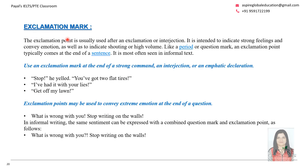Now let's understand the exclamation mark. An exclamation point is usually used after an exclamation or interjection and is used to express emotions. For example: 'Stop!' he yelled. 'You've got two flat tires!' 'Get off my lawn!' This is normally used in direct speech. We do not use exclamation marks in any formal or semi-formal writing or academic contexts.